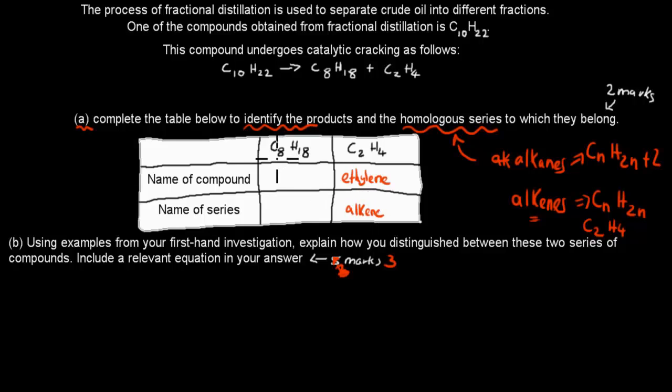And this has 8 carbons. And remember, with the actual IUPAC nomenclature, 8 is oct. So that's oct. And it's octane. And the reason why is because it belongs to the alkane family. So octane is alkane.